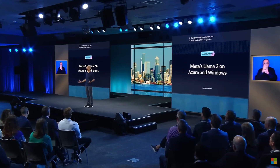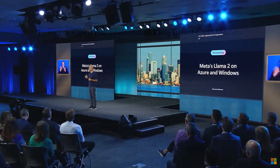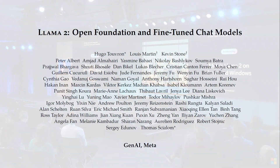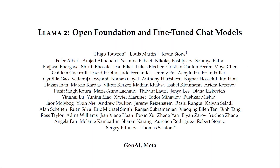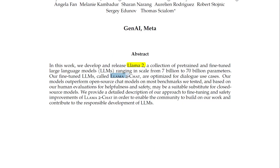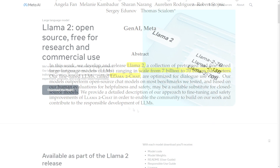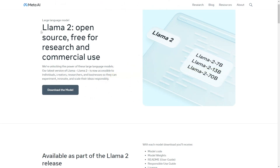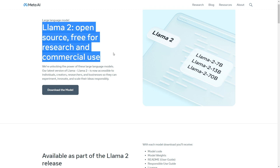In this work, Meta developed open access to LLAMA2, a family of pre-trained and fine-tuned LLMs, LLAMA2 and LLAMA2Chat. It scales up to 70 billion parameters. The following models are released to the general public for research and commercial use.